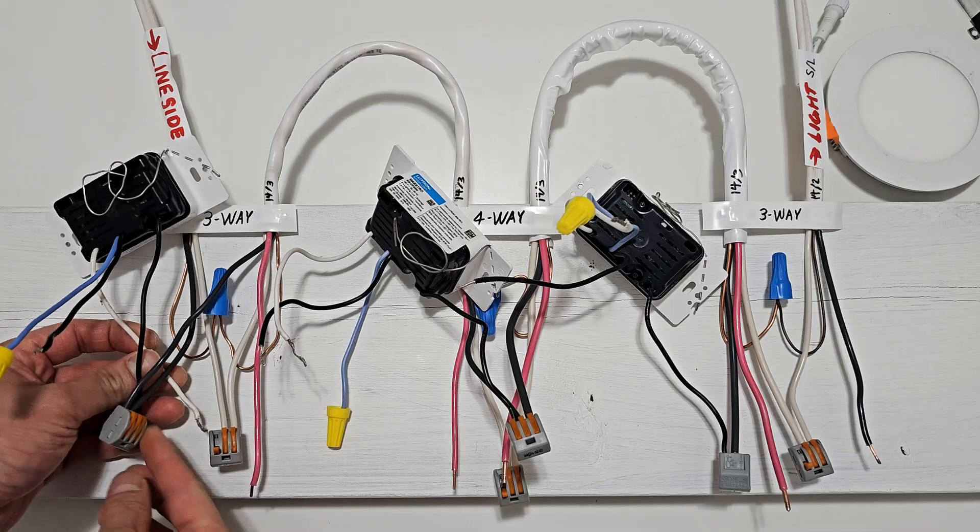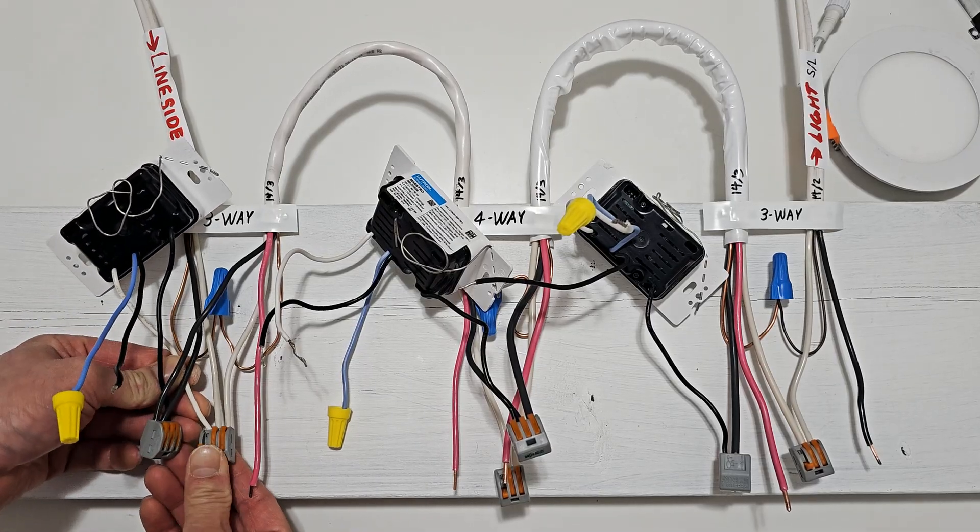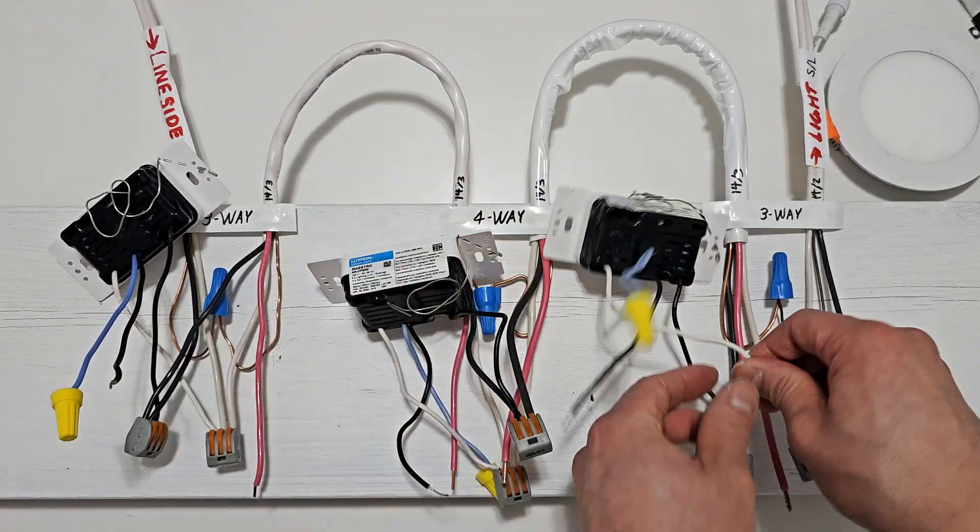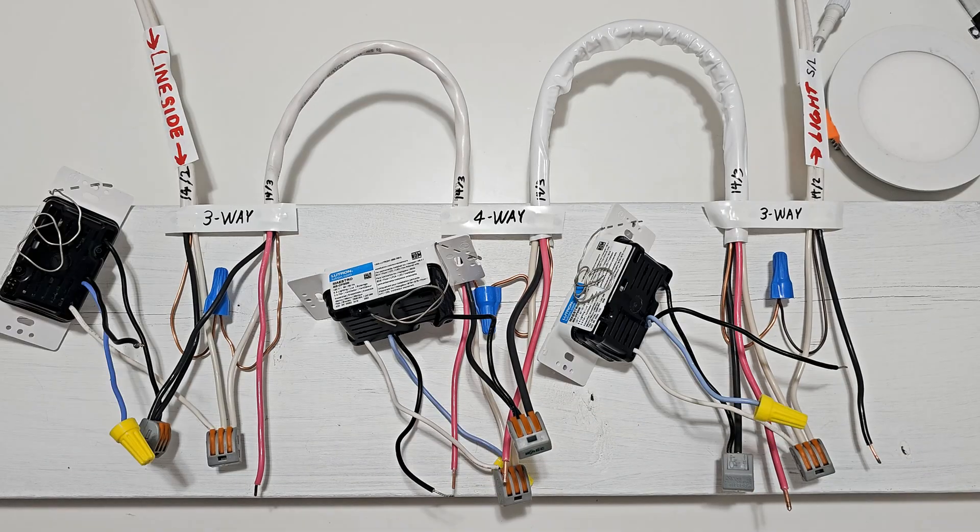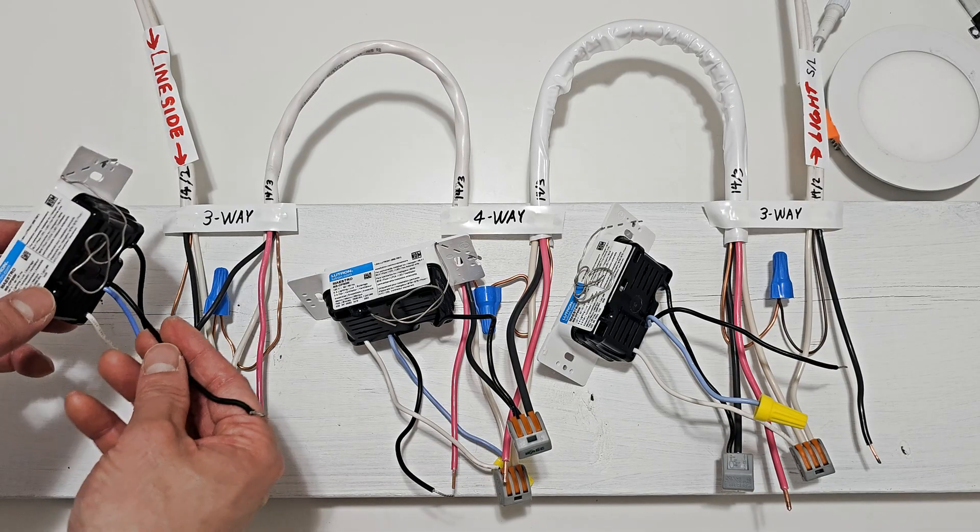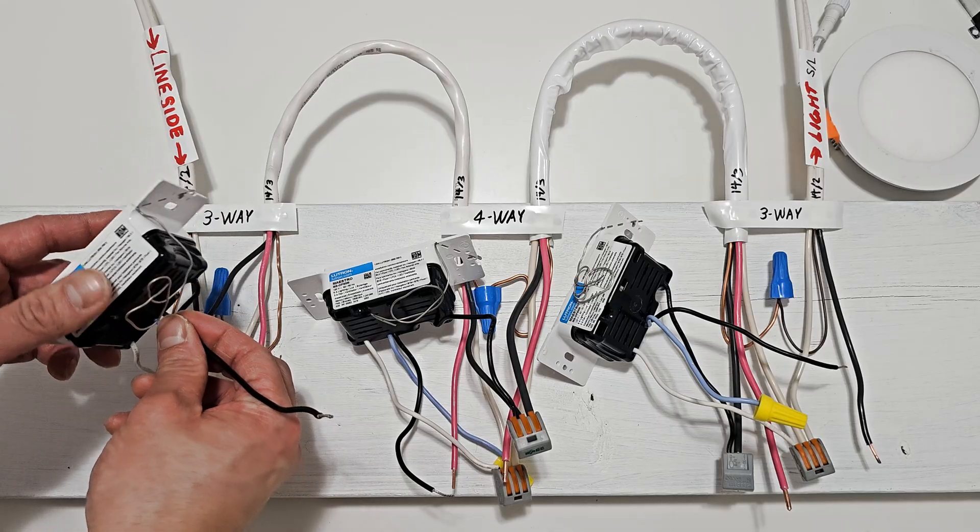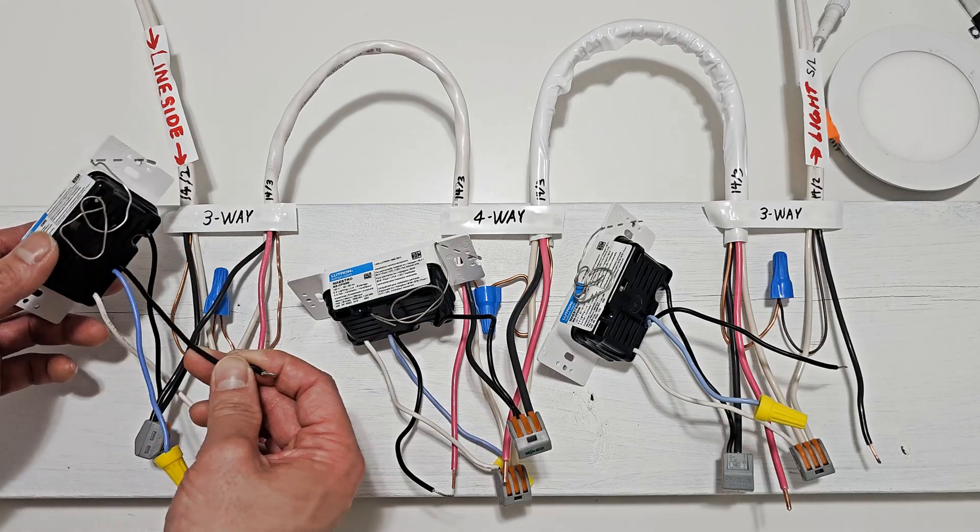Now next, let's connect all the neutral wires together. Now we can splice the remaining wires in each area. This black wire here is what delivers power to the light.